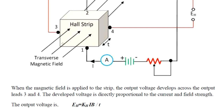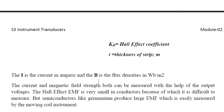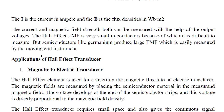The output voltage is directly proportional to the current and the magnetic field. The EMF equation is: EH equals KH multiplied by I multiplied by B, divided by T — where KH is the Hall Effect coefficient, I is the current, B is the magnetic flux density, and T is the thickness of the material. The Hall Effect EMF is very small in conductors, making it difficult to measure. However, semiconductors like germanium produce a large EMF, which is usually measured by moving-coil instruments.